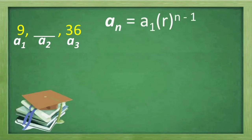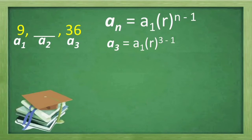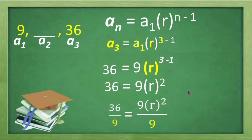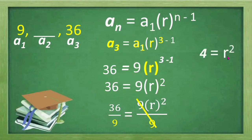We are going to use our formula: a sub n is equal to a sub 1 multiplied by r raised to n minus 1. That is the same as a sub 3 is equal to a sub 1 multiplied by r raised to 3 minus 1. The value of a sub 3 is 36, and our a sub 1 is 9 multiplied by r raised to 3 minus 1. We simplify 3 minus 1 to get 2 as the exponent. Then we divide both sides of the equation by 9 to eliminate the numerical coefficient of r squared. Simplifying 36 over 9, that is equal to 4, which equals r squared.